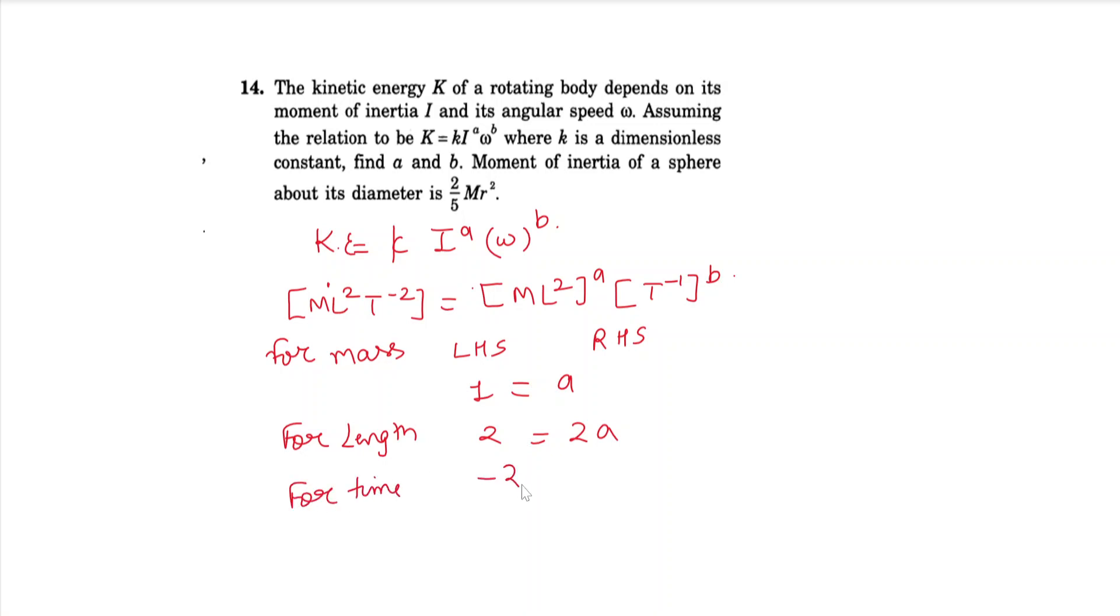On the left side, time is to the power minus 2. On the right side it's minus b. Solving, we have a = 1 and b = 2. So the proportionality is kinetic energy equals I^1 times ω².